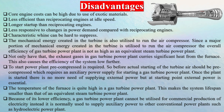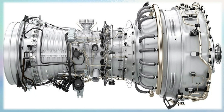To start the power plant, pre-compressed air is required, necessitating an auxiliary power supply for starting. Once the plant is started there is no more need for external power, but at the starting point external power is essential. The high furnace temperatures make the system lifespan smaller than that of an equivalent steam turbine power plant. Because of its lower efficiency, a gas turbine power plant cannot typically be utilized for commercial production of electricity; instead it is normally used to supply auxiliary power to other conventional power plants such as hydroelectric power plants.